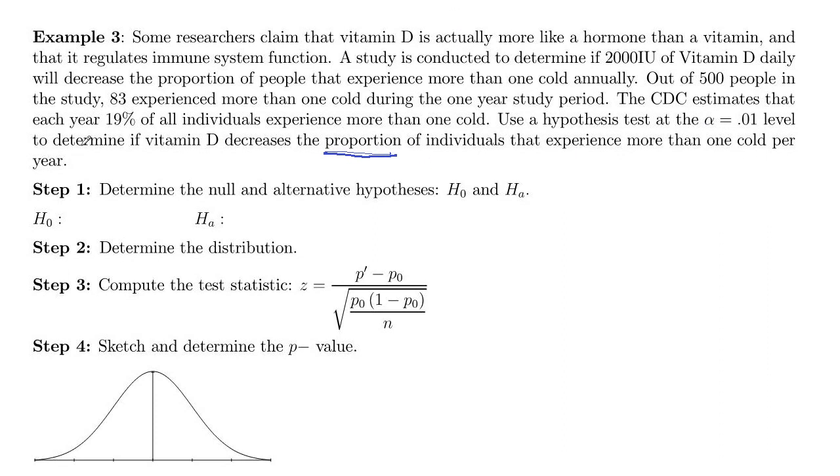So we want to decrease the proportion from the accepted value. That's our H_A. P less than 0.19 would be our alternative. The null is P greater than or equal to 0.19. So there's our null and alternative.